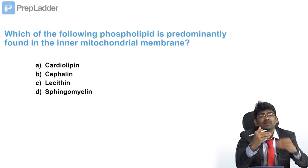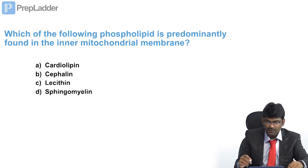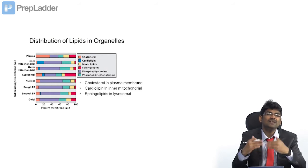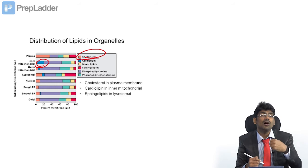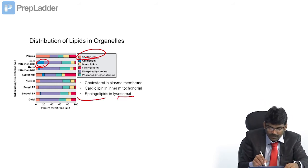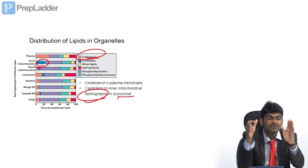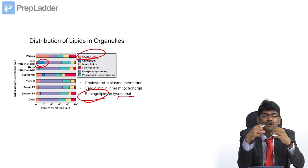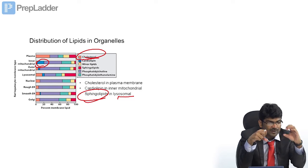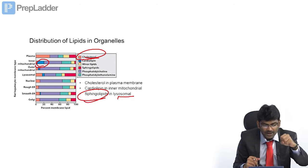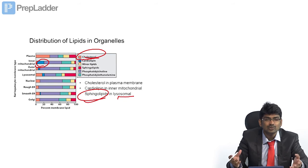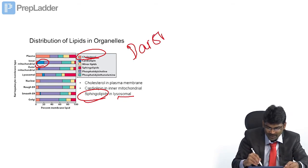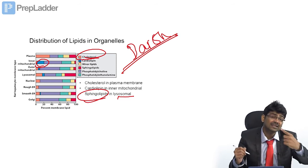Which phospholipid is predominantly found in the inner mitochondrial membrane? Different membranes contain different kinds of lipids. The plasma membrane has more cholesterol; the inner mitochondrial membrane has a significant amount of cardiolipin; the lysosomal membrane has a lot of sphingolipids. This differential distribution is according to function. Cardiolipin is involved in signaling pathways and is important for Complex 5. The defect in cardiolipin synthesis leads to Barth syndrome.